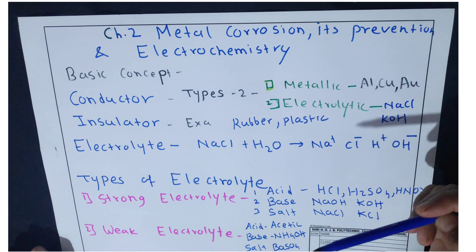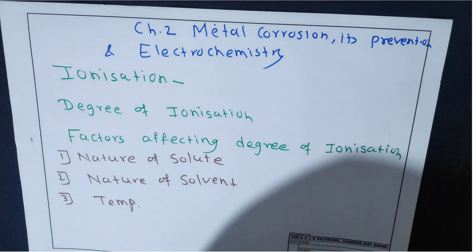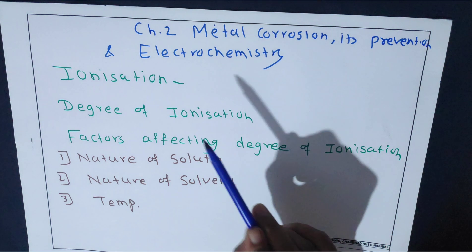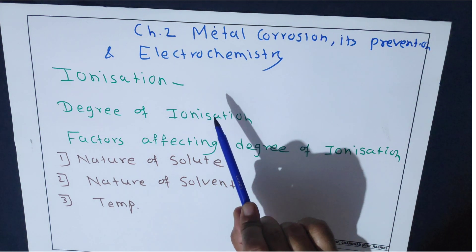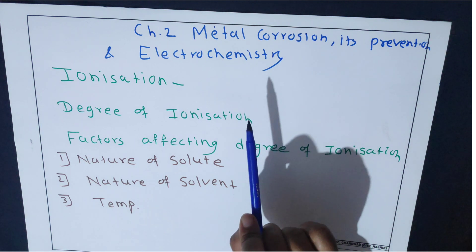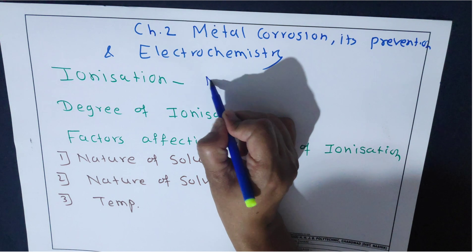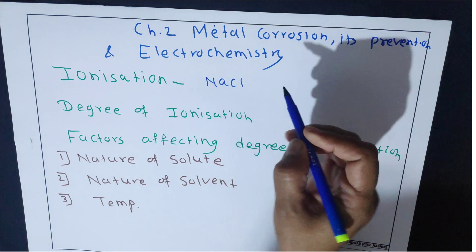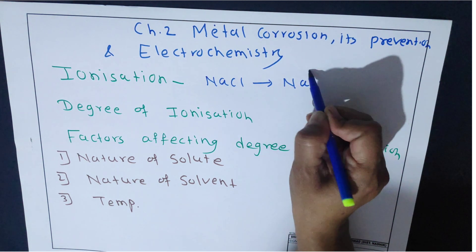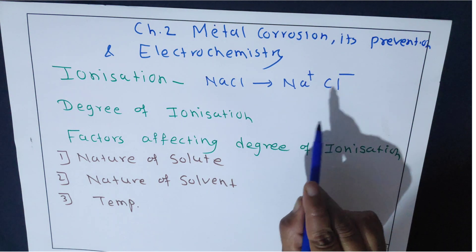Now the next topic is ionization. Ionization is the process of breaking up of a substance into charged atoms or radicals. For example, NaCl when in fused state or aqueous state forms ions Na⁺ and Cl⁻. This formation of ions is known as ionization.